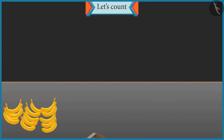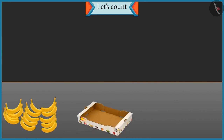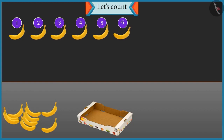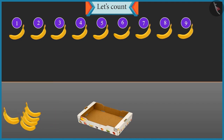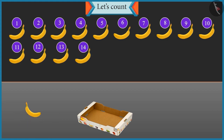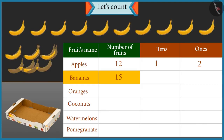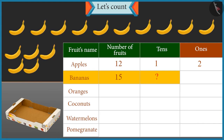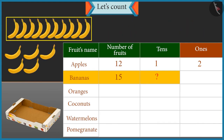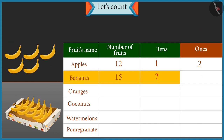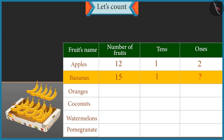Now count these bananas and place them in the second box. One, two, three, four, five, six, seven, eight, nine, ten, eleven, twelve, thirteen, fourteen and fifteen. There are fifteen bananas. How many tens are there in fifteen? A group of ten will be formed, so there is one tens in fifteen. And how many ones are there? There are five bananas left, so there are five ones. Well done, Chotu.